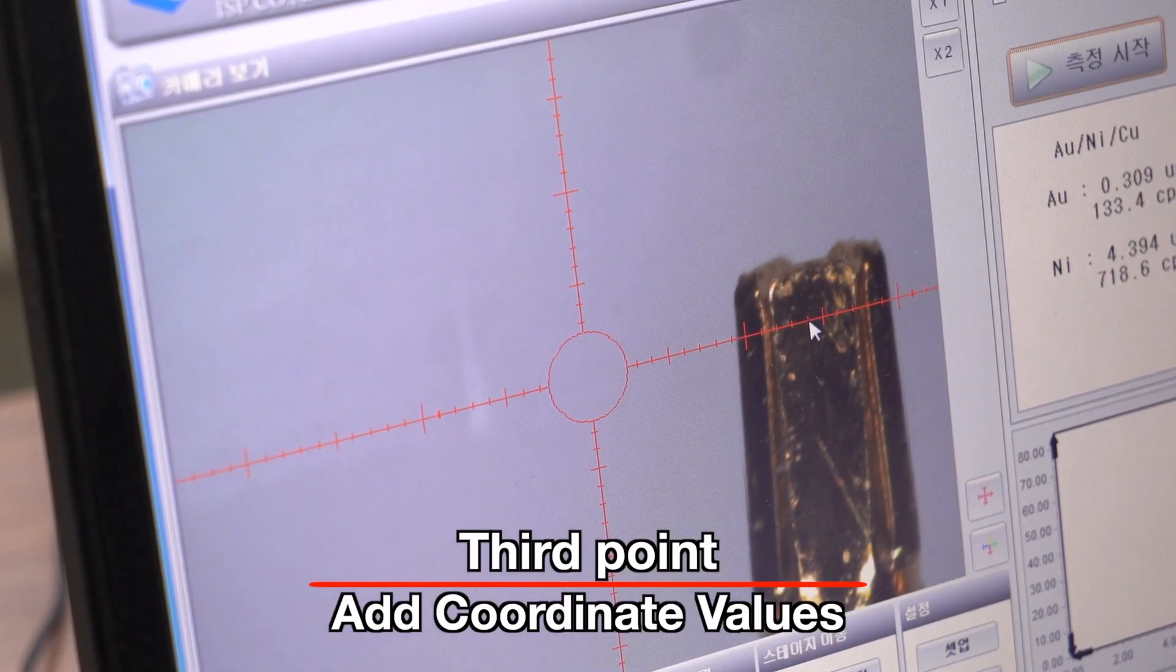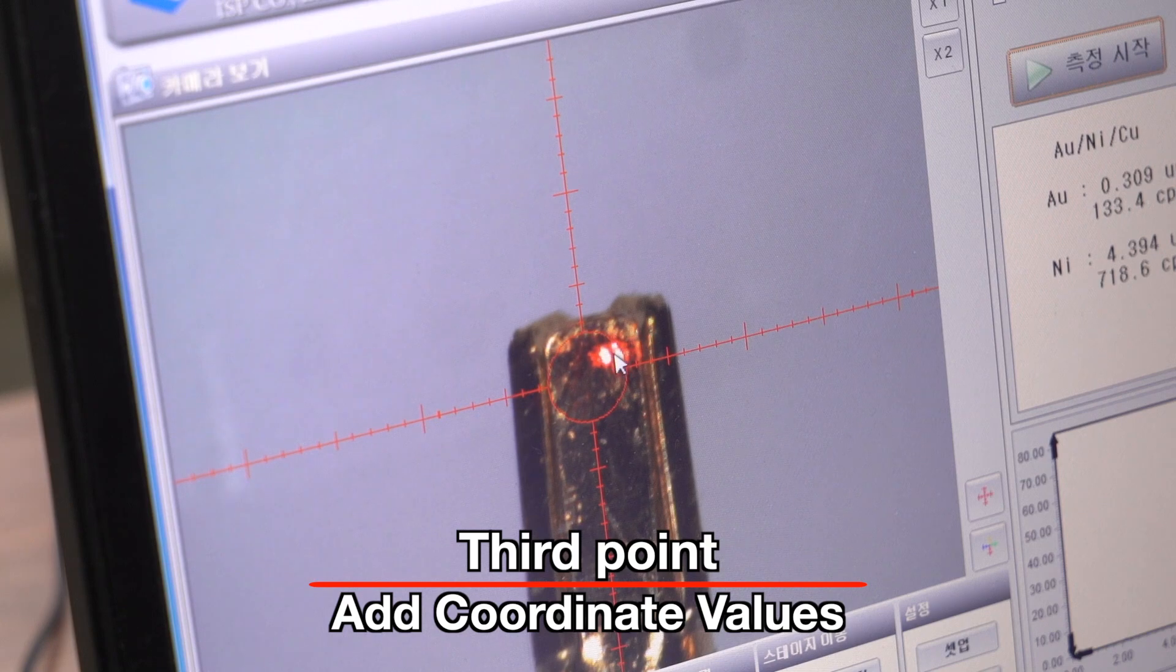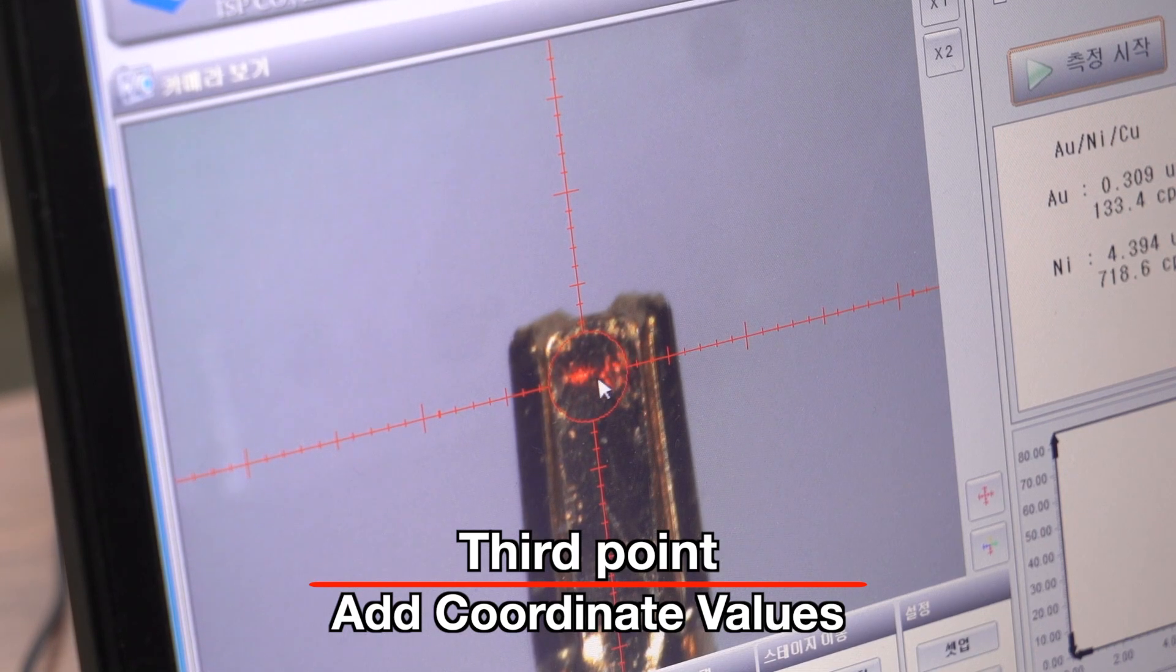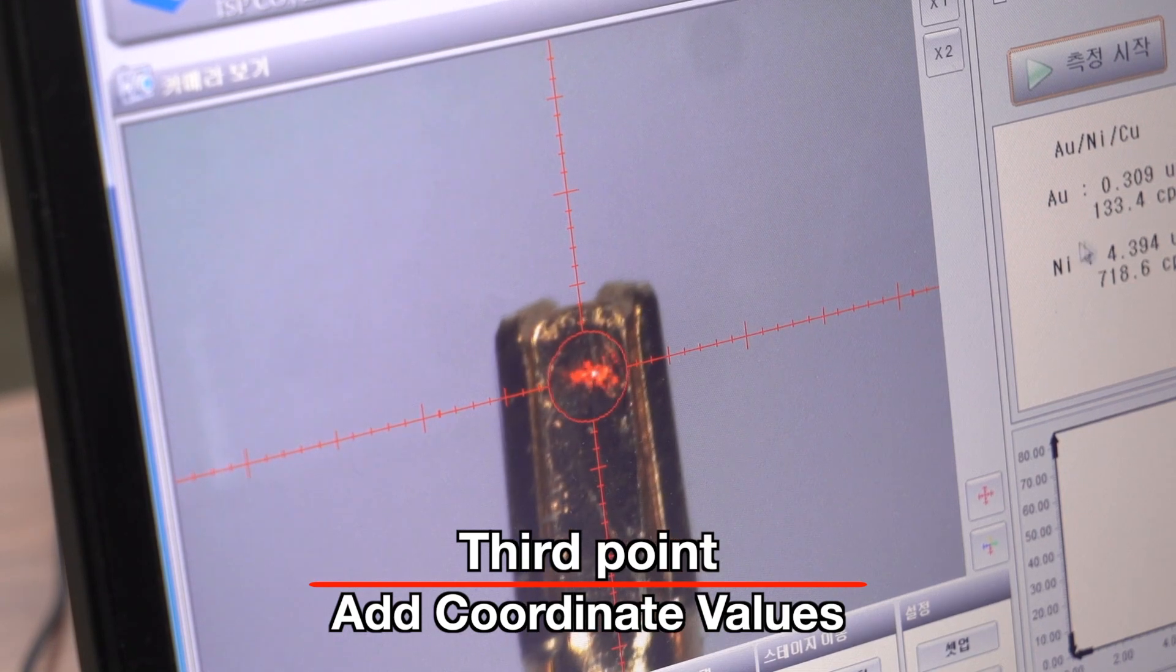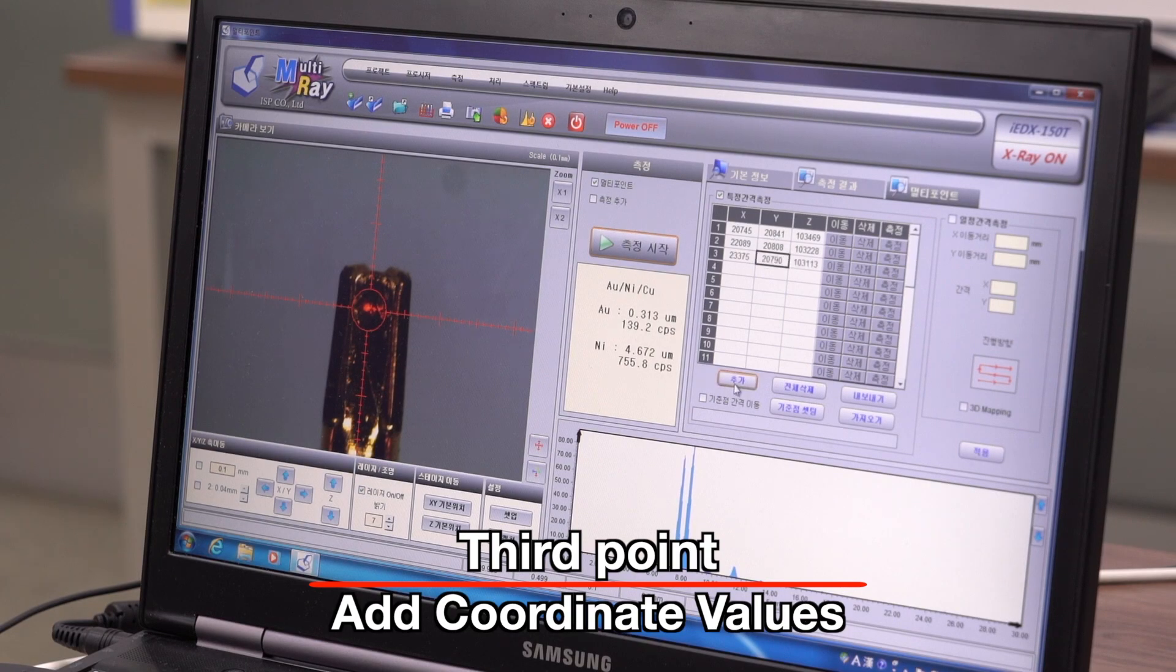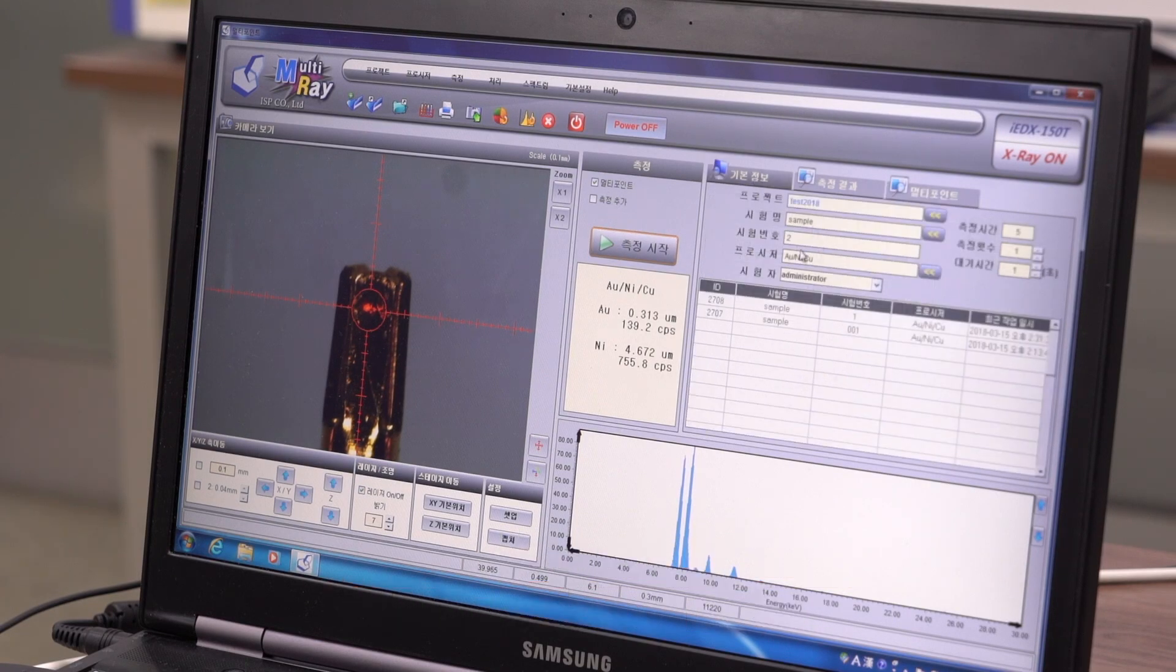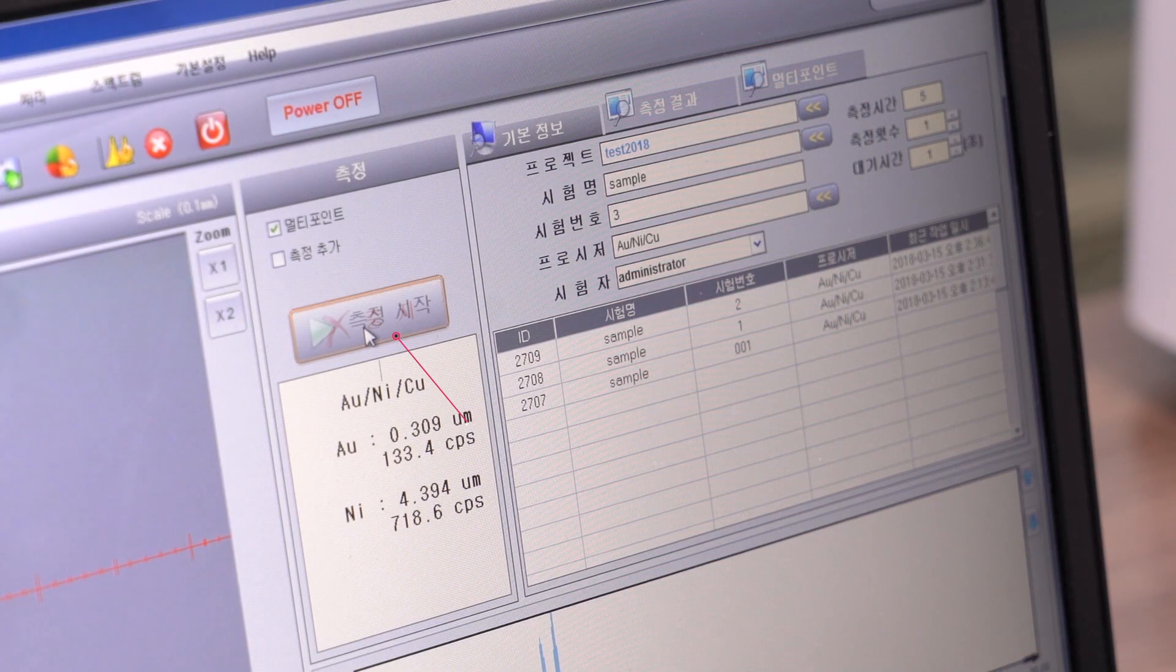Move to the next position. Press the add button again. After confirming the basic information, press the measure button.